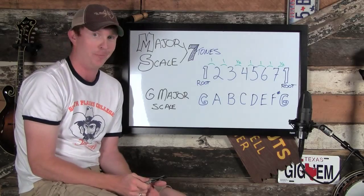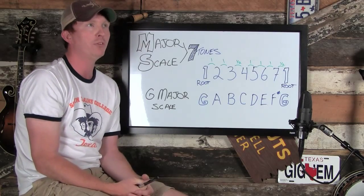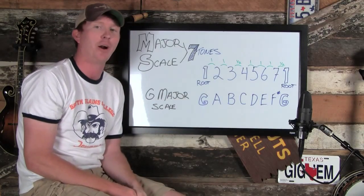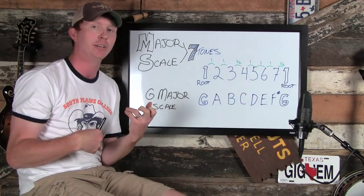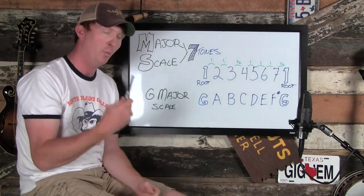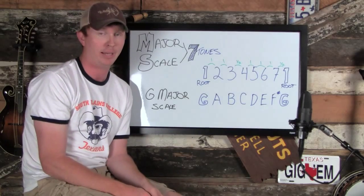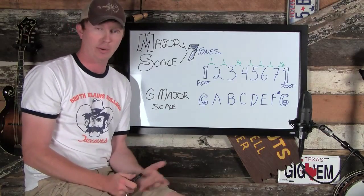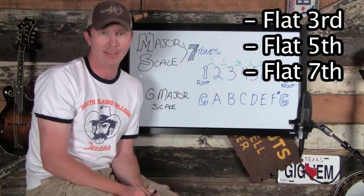Now we know what our major tones are, so we have to figure out where our blues notes are. Blues notes are essentially some of the notes that we skip over as we're playing our major scale. When we skip a fret in our major scale, we're skipping over blues tones. But there are really three blues tones used very commonly in commercial music — in bluegrass, in blues, in country — and those are the flat third, the flat fifth, and the flat seventh.